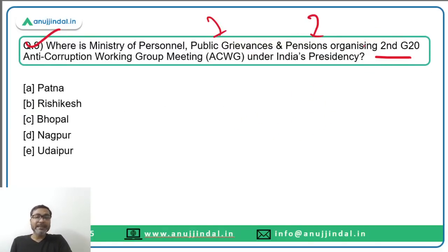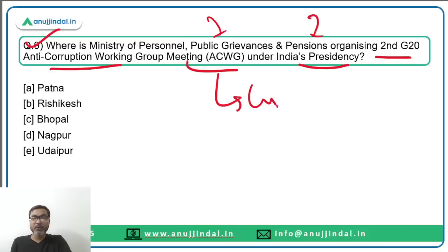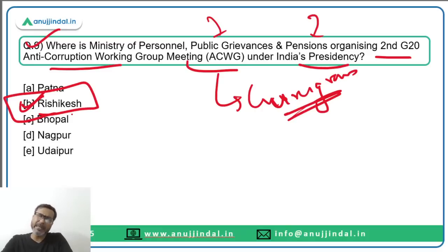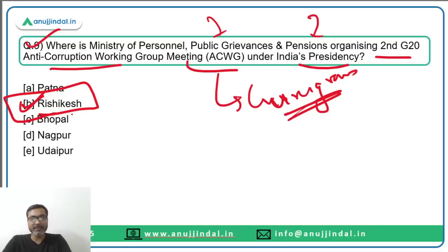Question nine: The Ministry of Personnel, Public Grievances and Pensions is organizing the second G20 Anti-Corruption Working Group meeting under India's presidency. The first meeting took place in Gurugram, Haryana; the second will take place in Rishikesh. A separate session on all G20 India presidency meetings will be conducted, as two to three questions are expected in the examination.